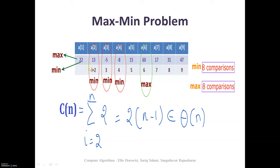To find the minimum element, assume the first element is the minimum and compare with the next element. 13 is minimum, so minimum becomes 13. Then 13 is compared with minus 5, so minimum becomes minus 5. Minus 5 is compared with minus 8, and now minus 8 is smaller, so minimum is set to minus 8.